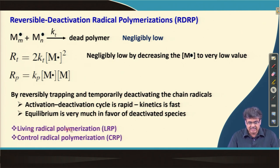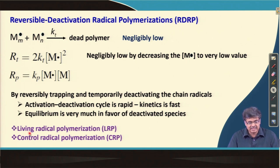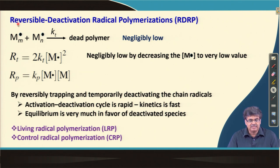As I mentioned earlier, this used to be called living radical polymerization, but as I explained, it is actually not truly living because there will be some bimolecular termination reaction. So we cannot say it is a completely living radical polymerization — we can say quasi or pseudo-living polymerization. Researchers then called this controlled radical polymerization, because you can control the polymerization. But to avoid all these terminologies, in about 2009, IUPAC came with this nomenclature, which captures the mechanistic aspect — reversible deactivation of the propagating radical.